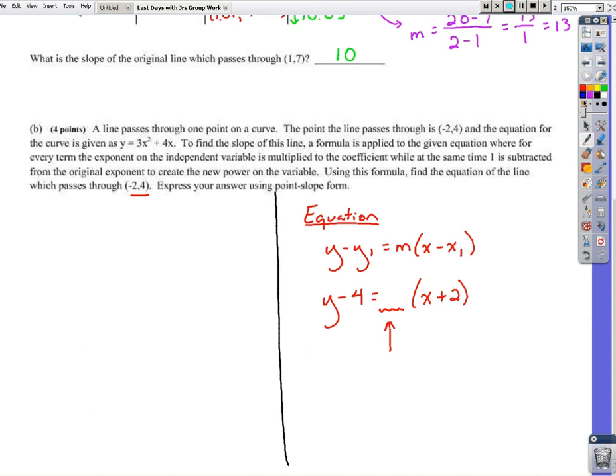So to find the slope, let's consider this special formula. Breaking this down. To find the slope of this line, a formula is applied to the given equation where for every term, the exponent on the independent variable.